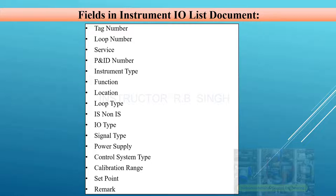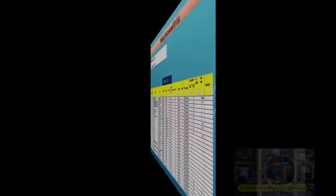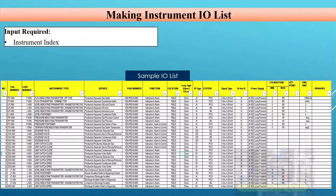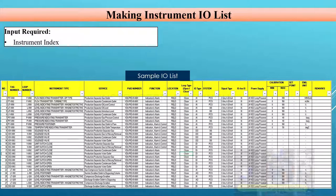Apart from these fields, you can add others per client recommendations or specific data requirements, but these are the most important fields. The input for the IO List is the instrument index. While you can also prepare it based on the P&ID, that takes more time. Since all the activity has already been done in the instrument index, you simply apply filters on the IO type, extract those results to another Excel sheet, fill in additional information, and your IO List will be ready.